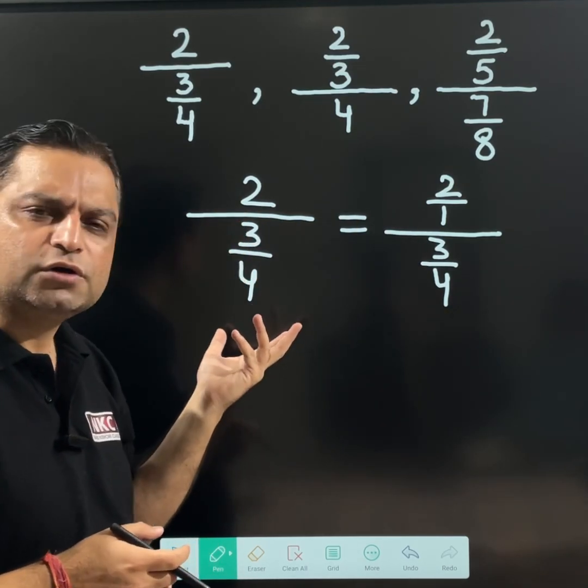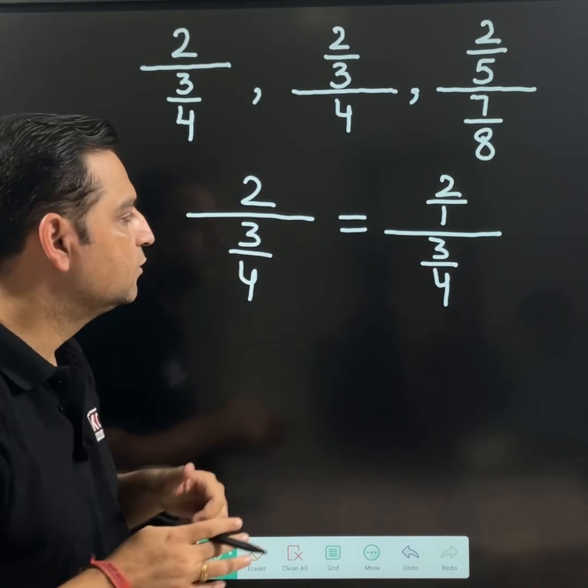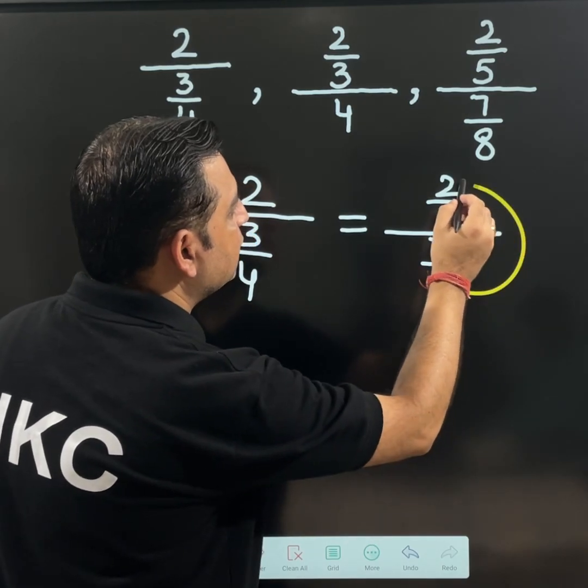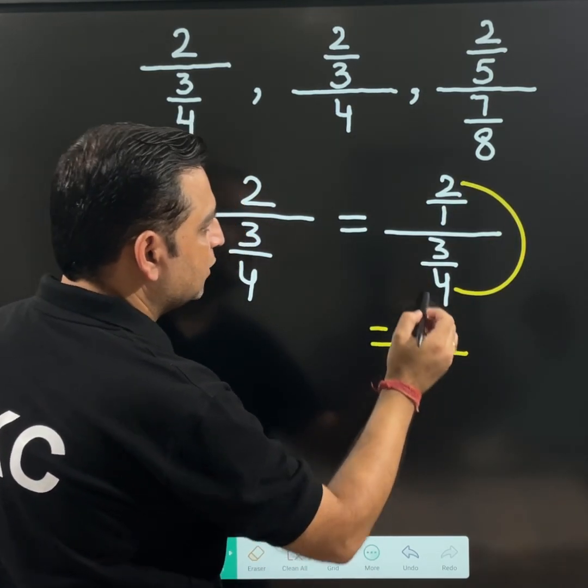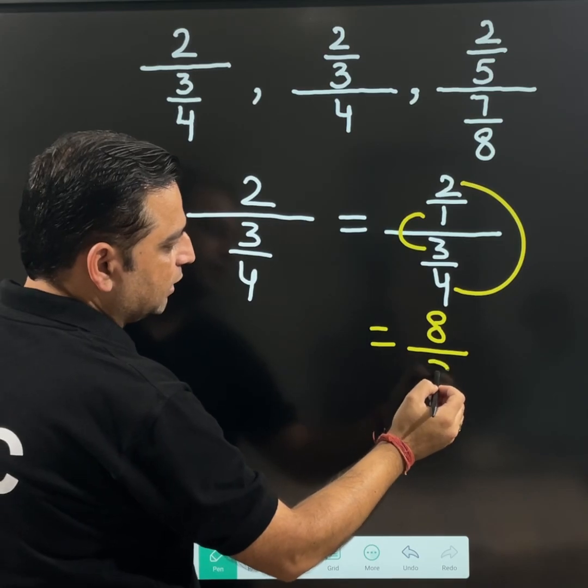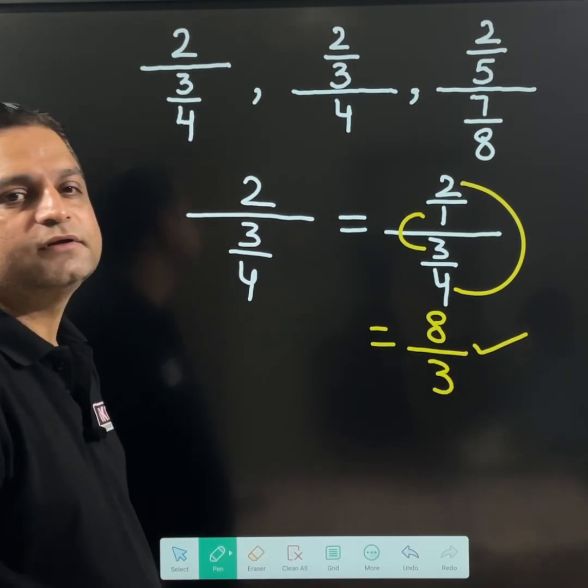Otherwise people use as a shortcut also. And you can see, bottom value 4 is multiplied with 2, I will get 8. 1 is multiplied with 3, I will get 3. 8 over 3 is the answer.